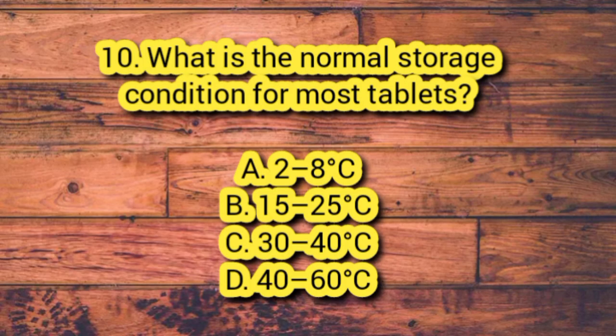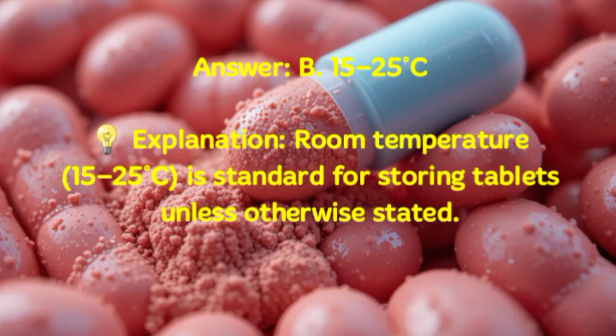Number 10. What is the normal storage condition for most tablets? A. 2–8°C. B. 15–25°C. C. 30–40°C. D. 40–60°C. Answer: B. 15–25°C. Explanation: Room temperature, 15–25 degrees Celsius, is standard for storing tablets unless otherwise stated.